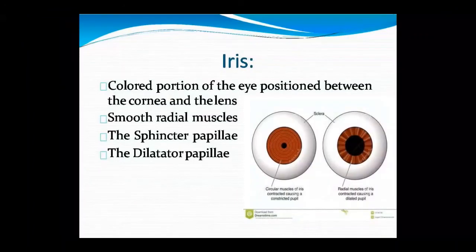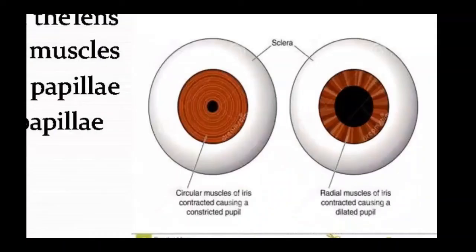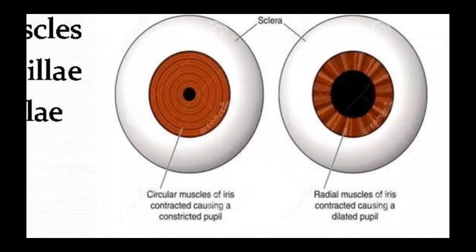The last structure is the iris, which is the colored portion of the eye located under the cornea. It is made of radial muscles and contains the sphincter pupillae and dilator pupillae. The radial muscles contract to dilate the pupil. The circular muscles contract to constrict the pupil. In bright conditions the iris contracts with circular muscles to constrict the pupil; the radial muscles contract when we dilate the pupil.